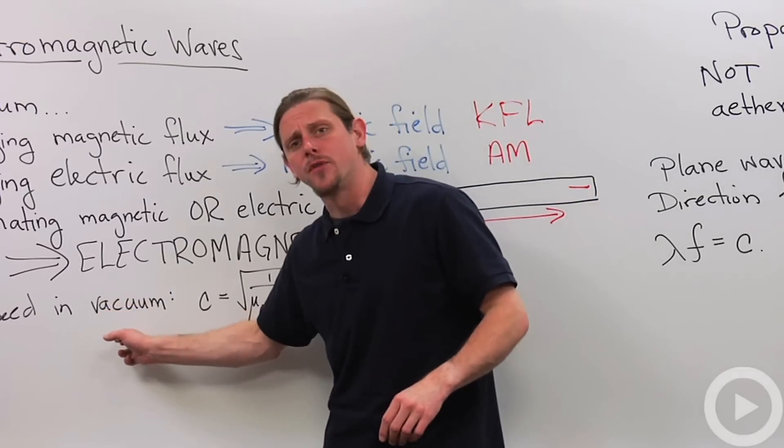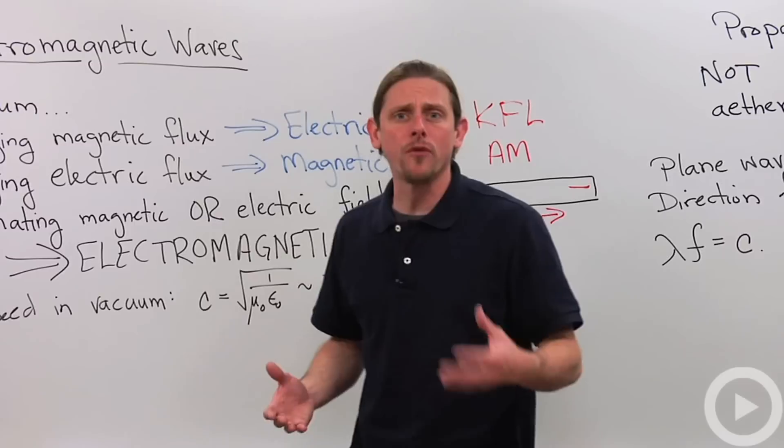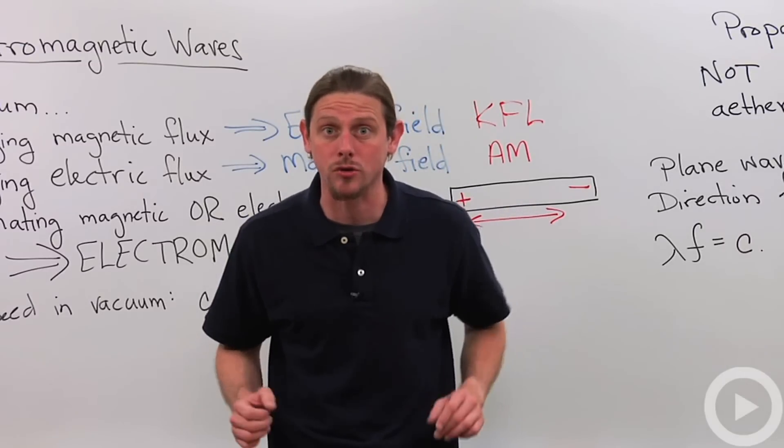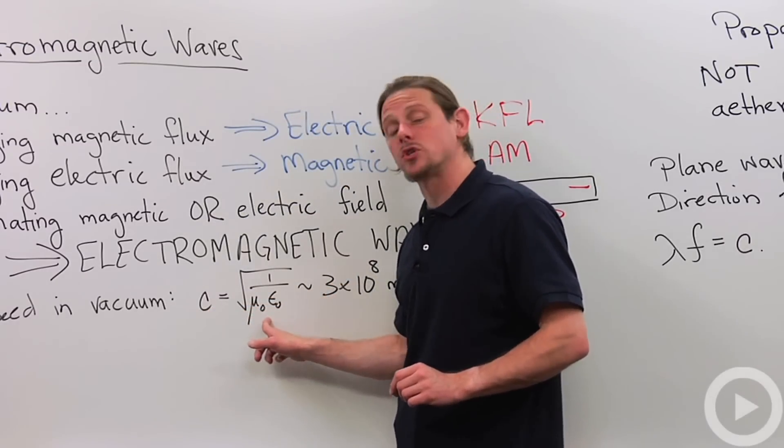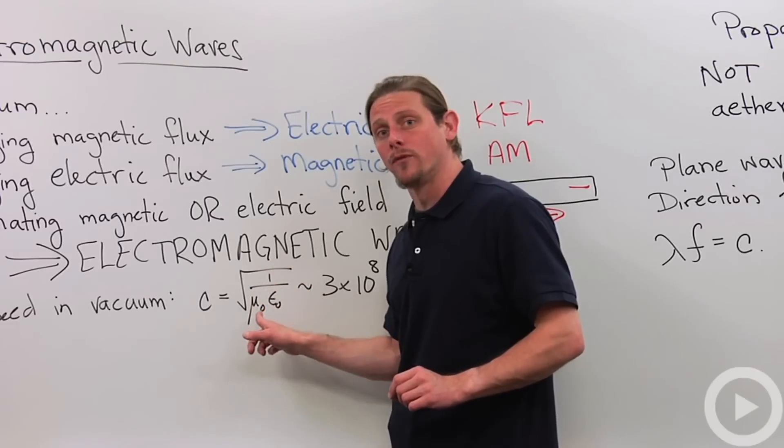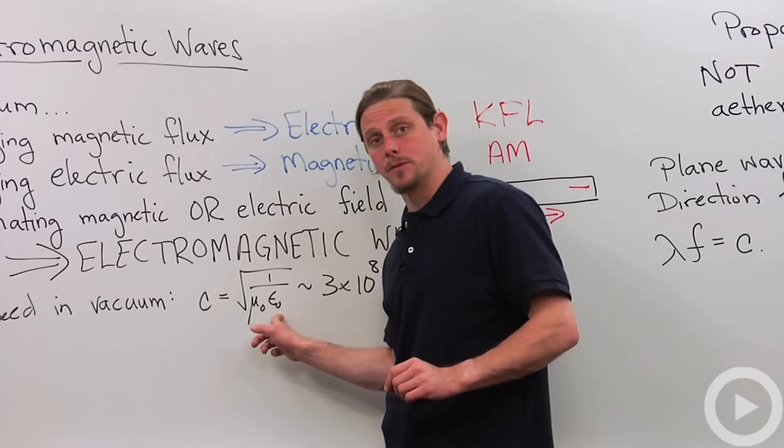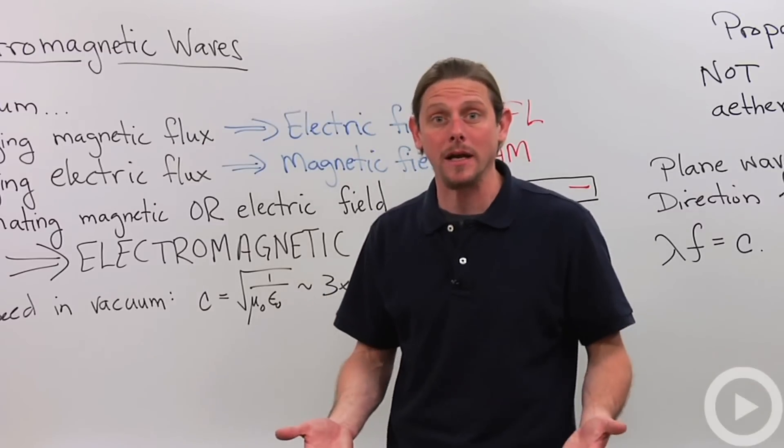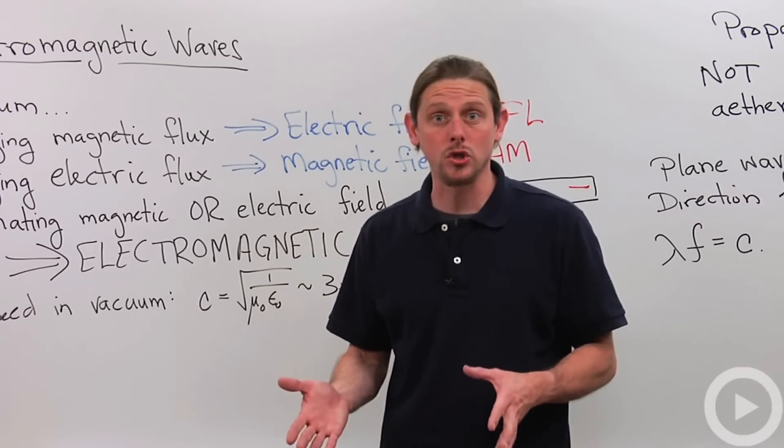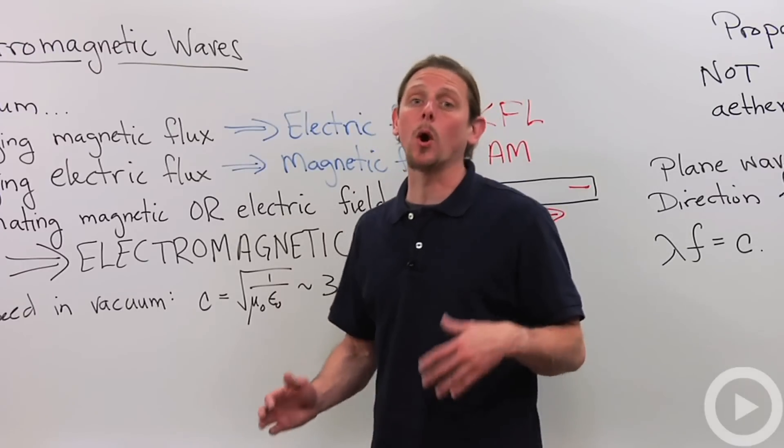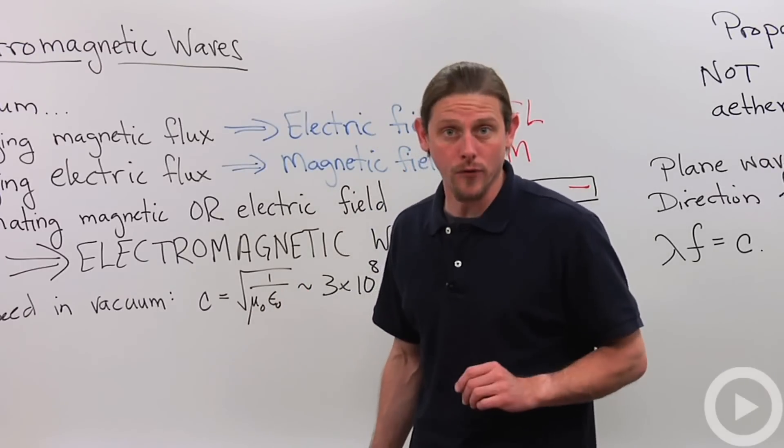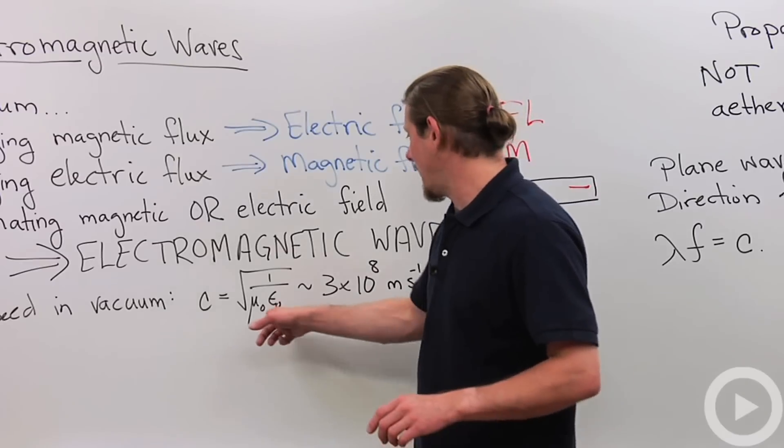All right the speed of the wave can be determined from the standard constants in electricity and magnetism. The speed is given by the square root of one over mu zero times epsilon zero. Mu zero is the permeability of free space and is associated with magnetic fields whereas epsilon zero is the permittivity of free space and is associated with electric fields.